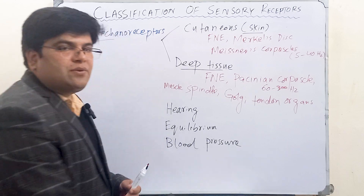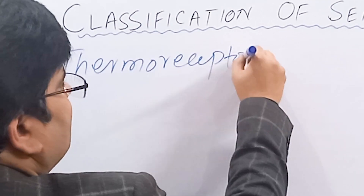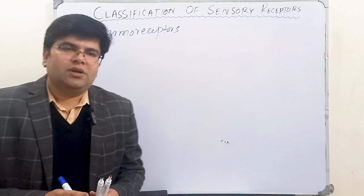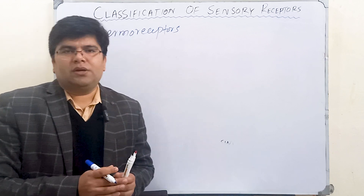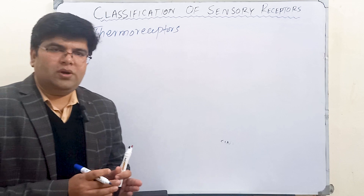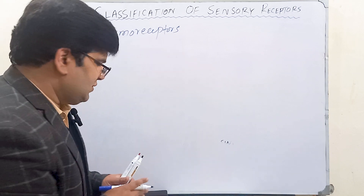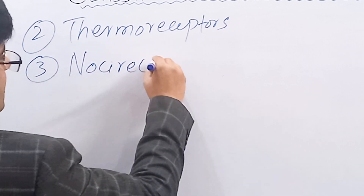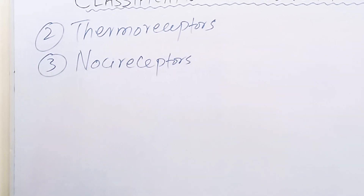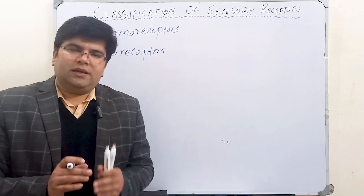After mechanoreceptors, the second category of receptors is thermoreceptors. Thermoreceptors detect change in temperature, and there are two types: one for cold and one for warmth. Then there are receptors for detecting pain, which we call nociceptors.